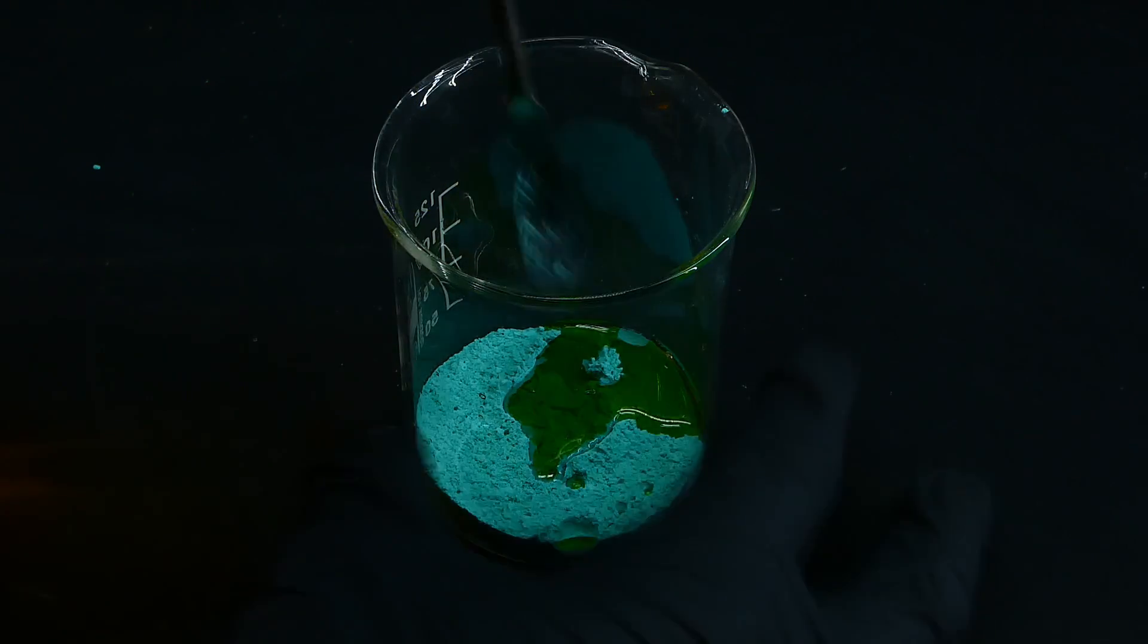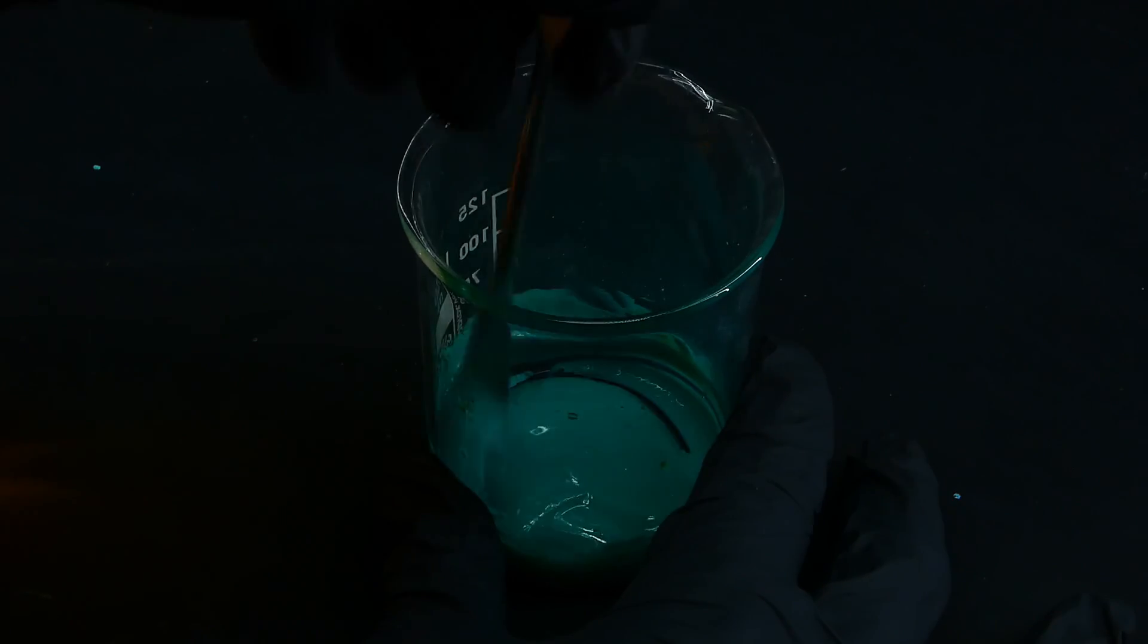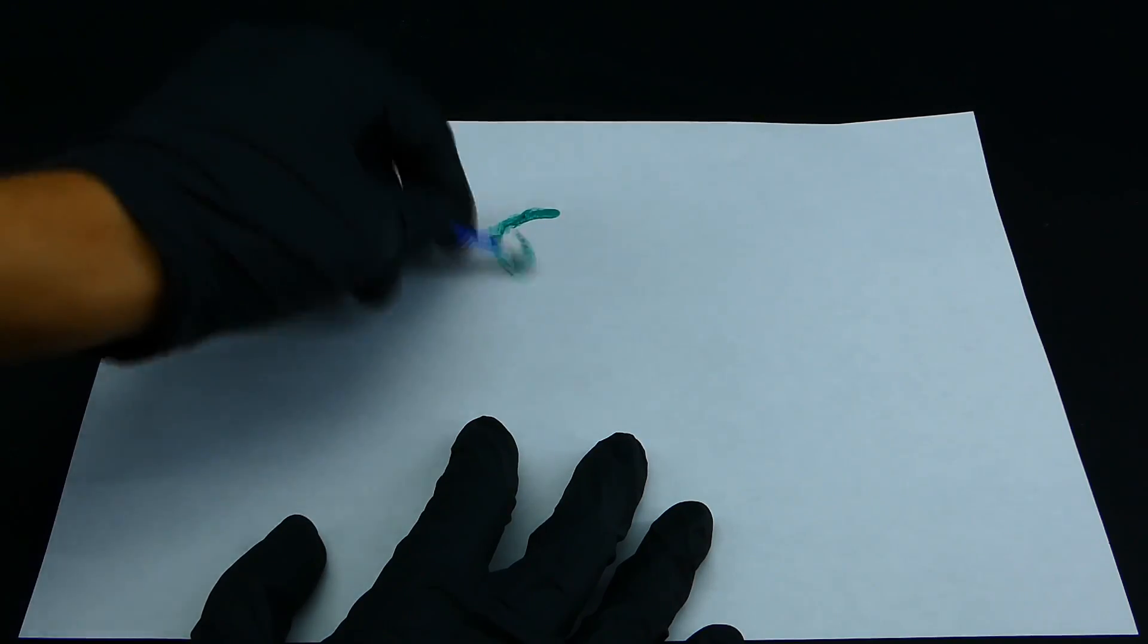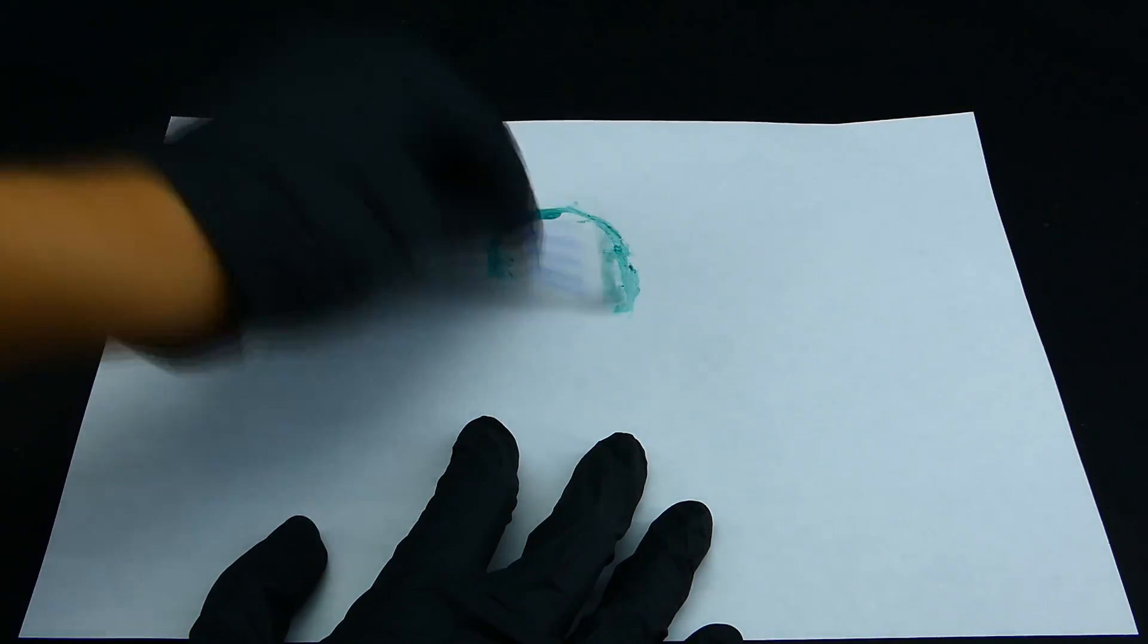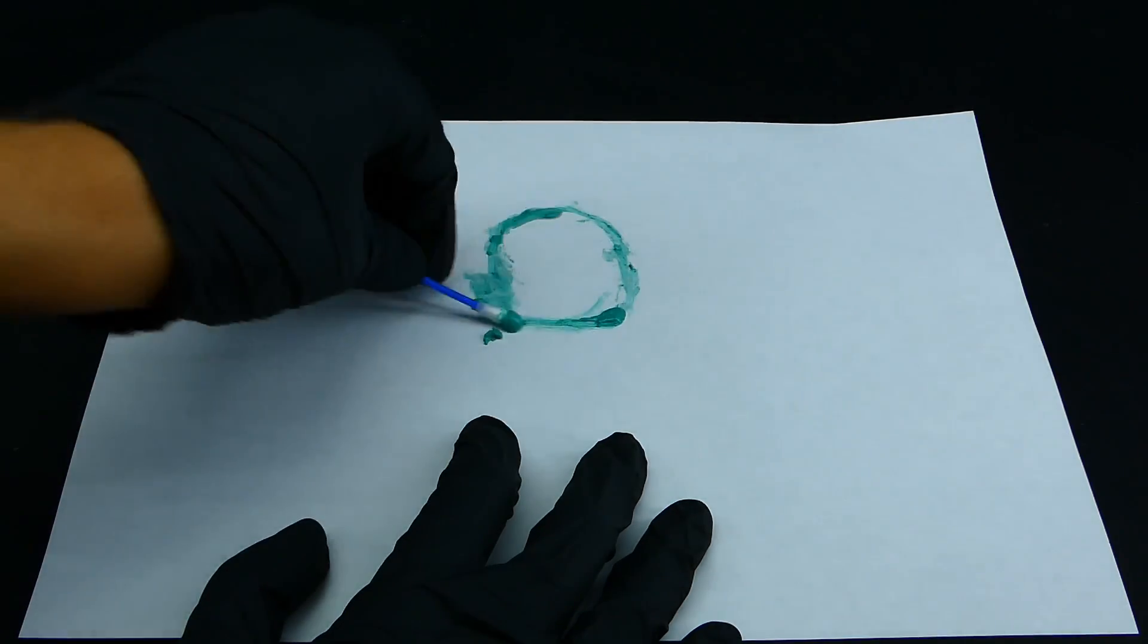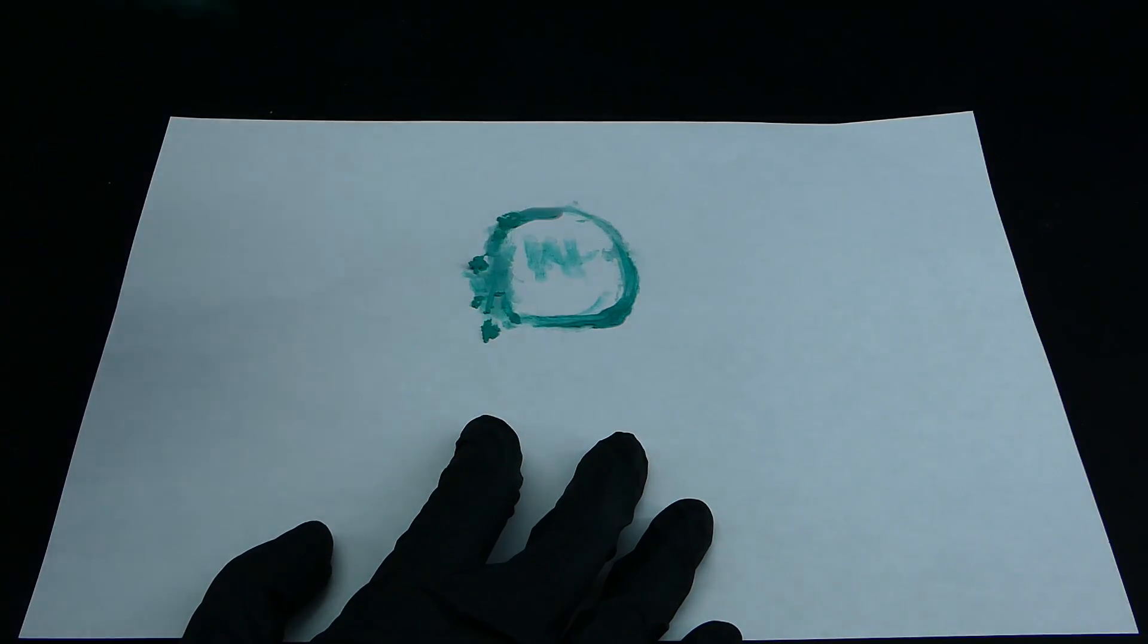It creates a slurry with a pretty good consistency, and to test it out I got myself a piece of paper and the closest thing that I have to a paintbrush, which is this cotton swab. The quality of this paint is very bad, and combined with my expert painting skills, I couldn't paint anything nice with it. I tried to paint my channel logo because it is almost the same color as the paint, but failed miserably.